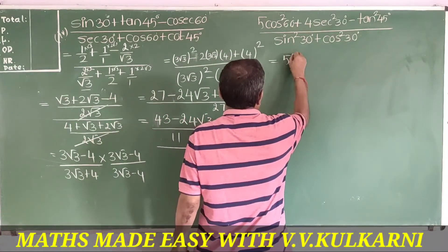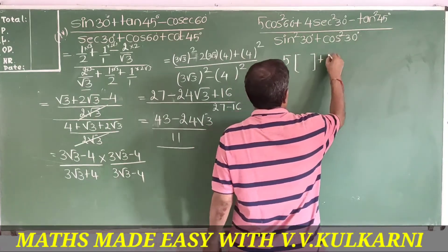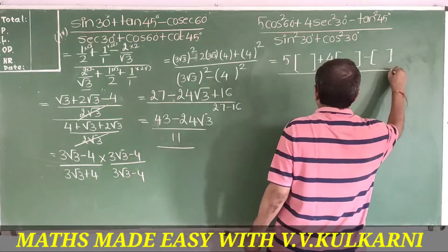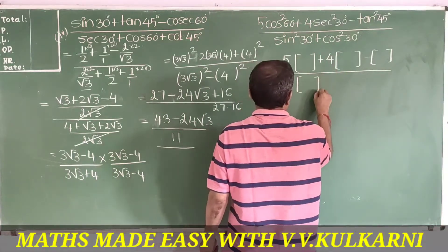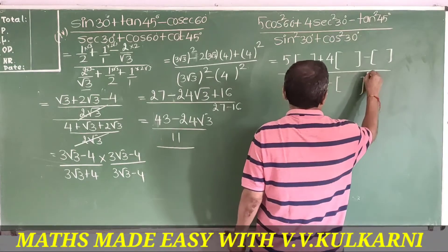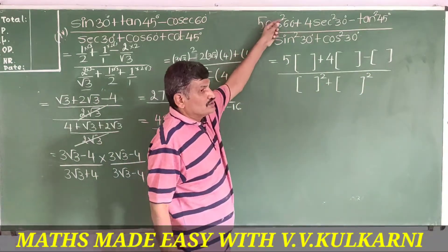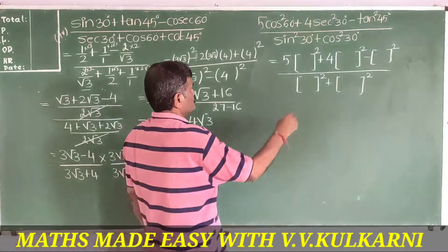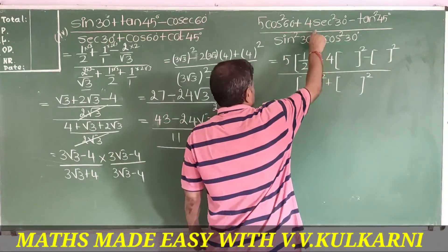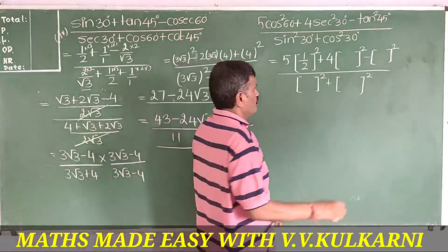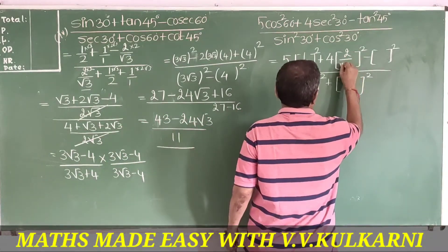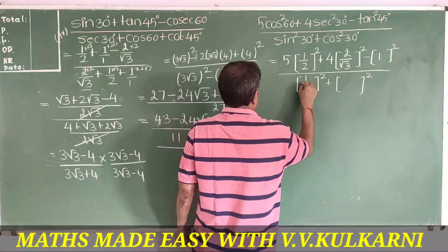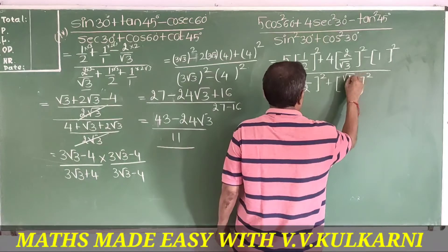The next problem: 5cos²60 plus 4sec²30 minus tan²45, divided by sin²30 plus cos²30. The values are: cos60 = 1/2, sin60 = √3/2, cos30 = √3/2 so sec30 = 2/√3, tan45 = 1, sin30 = 1/2, cos30 = √3/2.